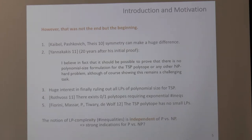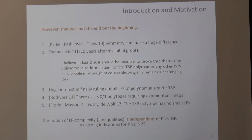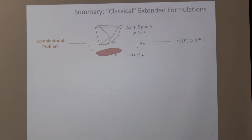Why do people care? This is a notion of complexity that is independent of P vs NP — you literally just count the number of resources needed to write down your linear program. It gives strong indications about P vs NP philosophically, but I won't get into that. Now let me tell you how lower bounds for extended formulations are typically proved, and then give you a more abstract model that is much more useful for CS-type reasoning.